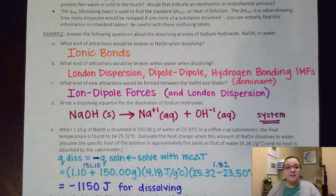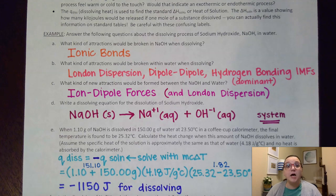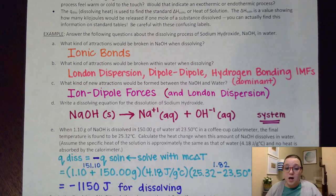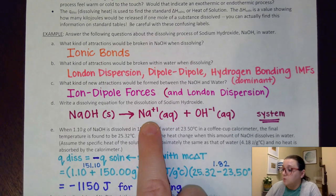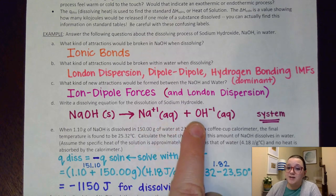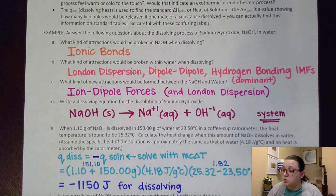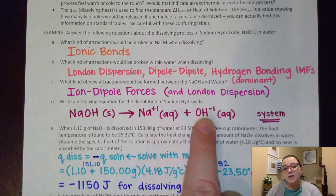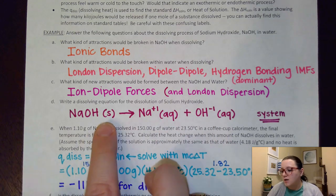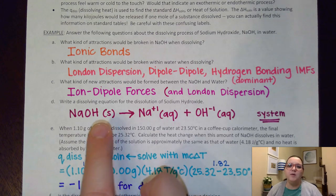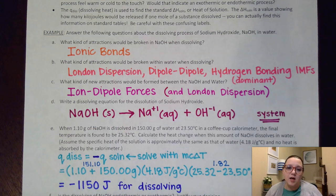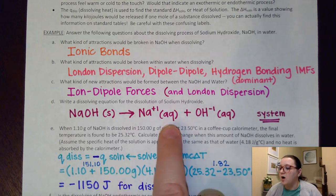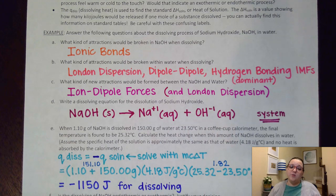On Part D, it asks us to write a dissolving equation for the dissolution of sodium hydroxide. We want to remember that sodium hydroxide is ionic, so when I put that into water it should dissociate into separate ions. I end up getting sodium positive 1 aqueous and hydroxide negative 1 aqueous. We want to make sure that we show charges with these. The ionic should be a solid to start out with, since that's the state almost all ionics are at at room conditions, but our ions should be aqueous because now they're dissolved in the water.